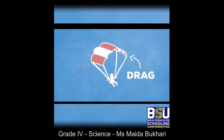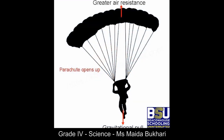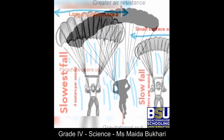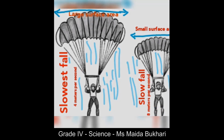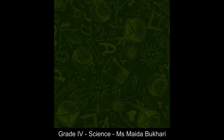The size of a parachute affects its falling speed. The large surface area of a parachute helps slow down its fall to the ground, while a parachute with a small surface area will drop to the ground more quickly than a larger one.